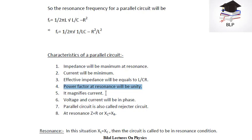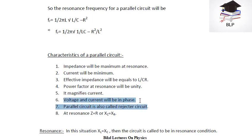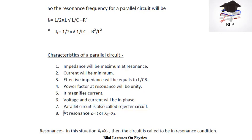This parallel circuit magnifies current. As I explained in my last lecture, a series circuit magnifies voltage, and a parallel circuit or rejector circuit magnifies current. Voltage and current will be in phase. And the seventh property is that a parallel circuit is also called a rejector circuit because we connect resistance, capacitor, and inductor in a parallel way, so that current has more ways to pass out from the circuit. Lastly, at resonance, Z equals R, and capacitive reactance and inductive reactance will be equal.